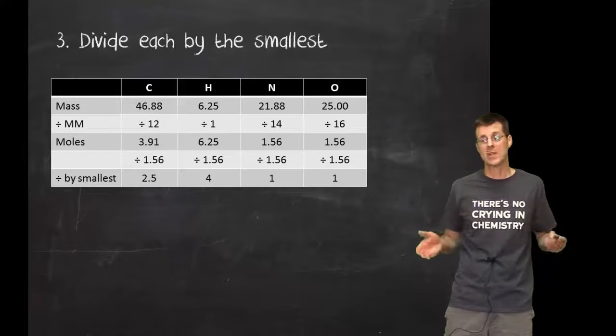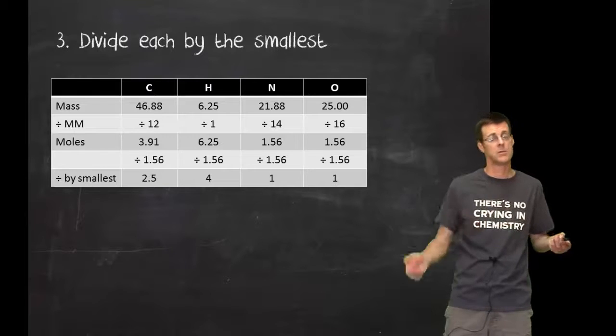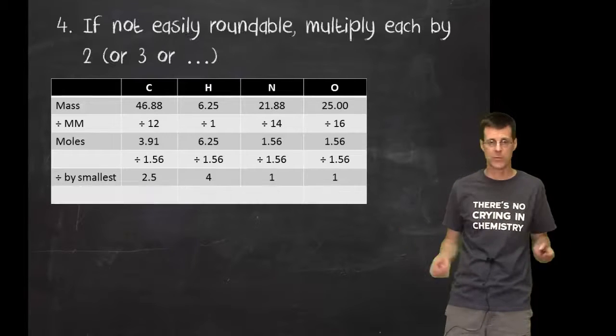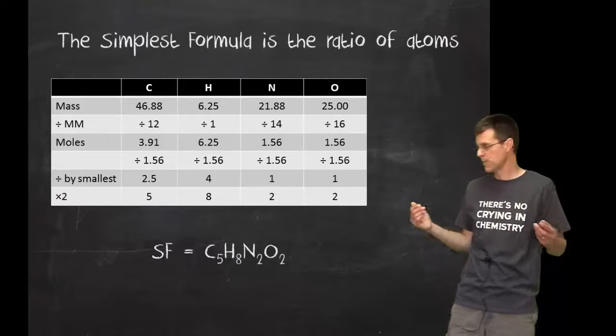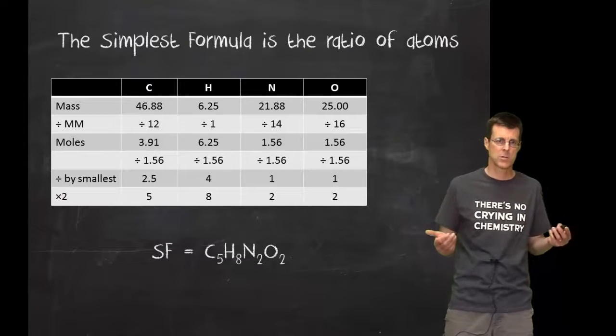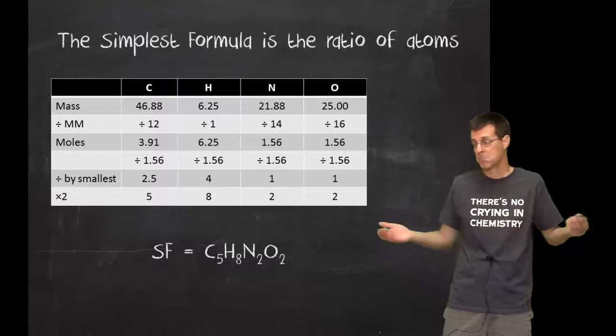Now I have to do something else. This must be a formula where things don't reduce to one of some element. So I'll multiply everything by two in this case, and I end up with a simplest formula of five carbons, eight hydrogens, two nitrogens, two oxygens, and I represent it like a chemical formula. Awesome.